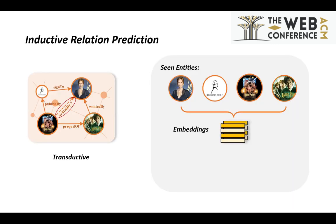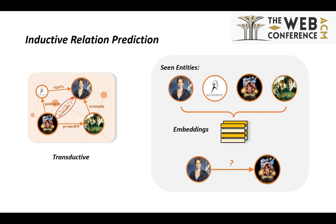In a structured story scenario, knowledge graphs use triples consisting of entities and relations to represent factual knowledge. Some typical representation methods aim at predicting missing entities and relations using embeddings in a transductive scenario, which requires the entities to be seen during testing.